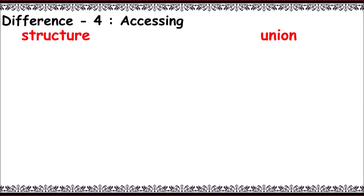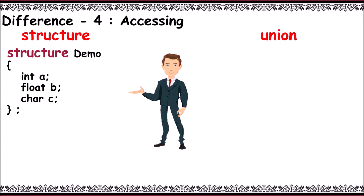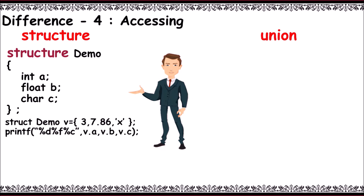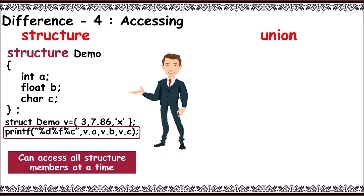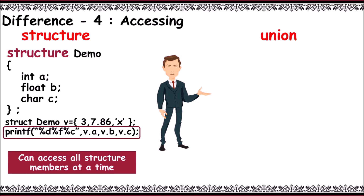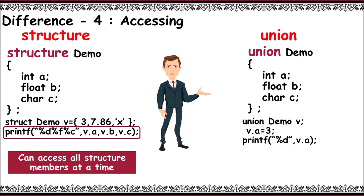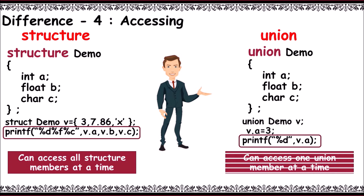The fourth difference is on accessing. In a structure, we can access — that is, print — all members at once: 'printf("%d %f %c", v.a, v.b, v.c)'. We can access all structure members at a time. But in union, we can print only one member value at a time: 'printf("%d", v.a)'. We can access one union member at a time. More videos on the way — keep learning!